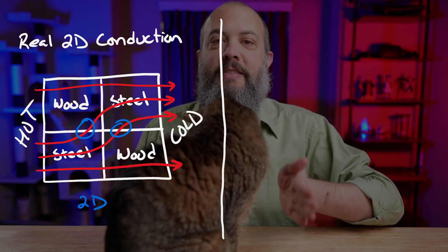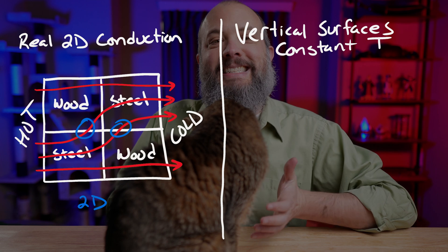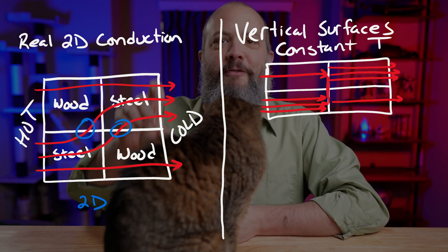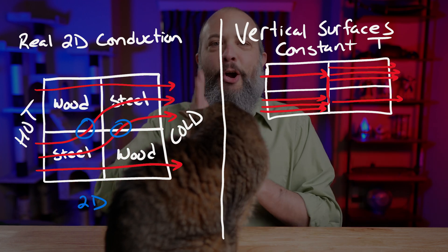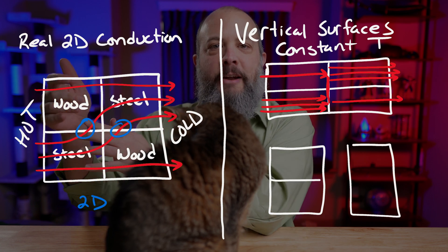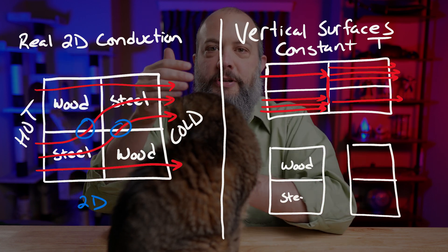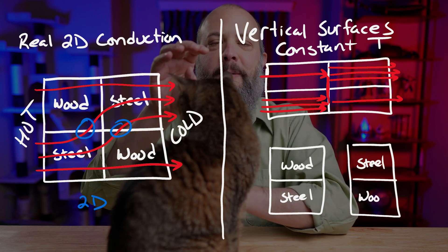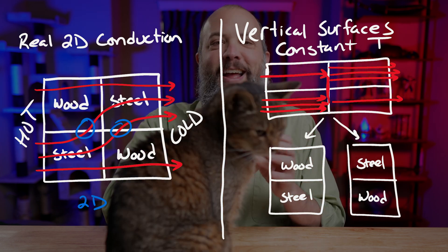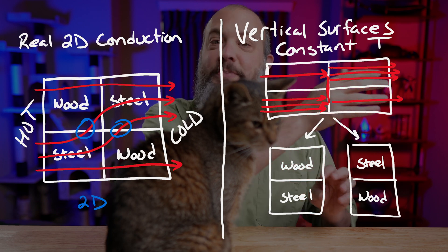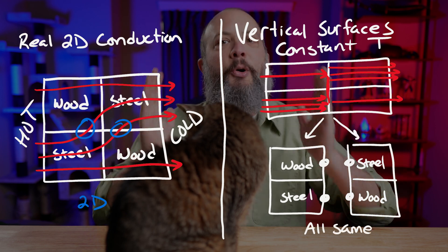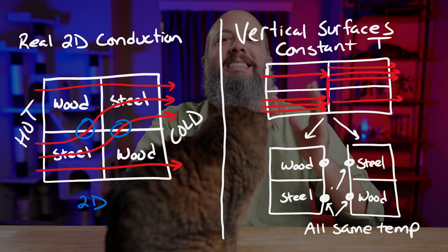For the first assumption, we say that all vertical surfaces are at a constant temperature. This allows heat to sort of instantaneously warp vertically. If we envision slicing the wall in half vertically and separating two vertical sections, we're allowing all of the energy to choose which section it wants to go through first — most will go through the steel, just a little through the wood — then it resets and makes a new decision through the next section of wall.